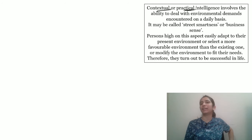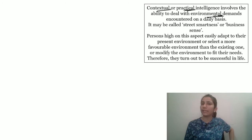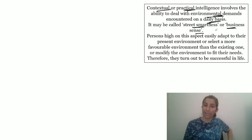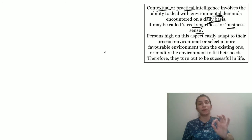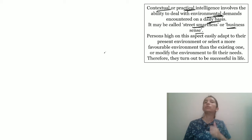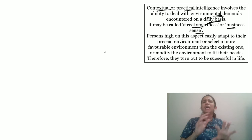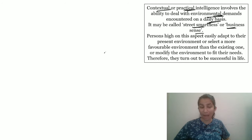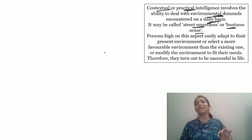Third: Contextual and Practical Intelligence. It is the ability to deal with environmental demands encountered on a daily basis. Practically, what you face in life — how to handle things smartly — this is also called street smartness or business sense. Sometimes they say this person is street smart. Practically, they know how to handle things with friends, their work, their parents. They know how to handle situations in life.